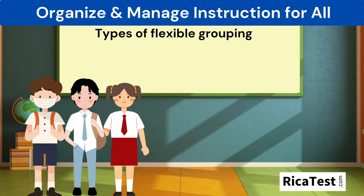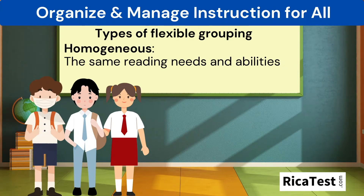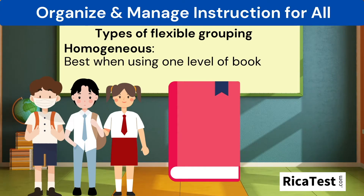Furthermore, there are two types of flexible grouping. The first is homogeneous grouping, which includes students with the same reading needs and abilities. Homogeneous groups work best when the text being read caters to one level of reader.